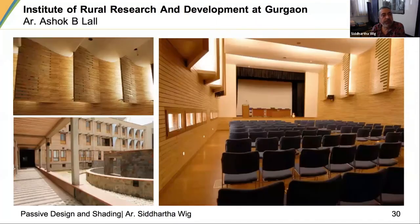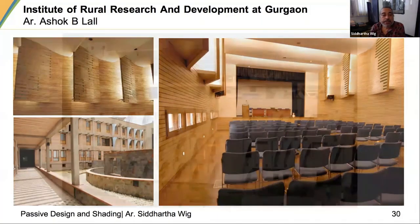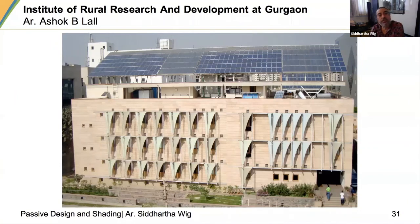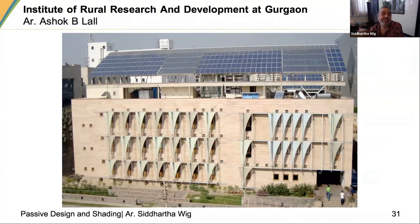Some views from the building show the choice of local materials — wood, stabilized soil blocks, local stone. From the outside, solar panels on the roof provide complete energy and also provide shade for the roof. The external shades are done in a very interesting aesthetic way, completely removing the regular chajja and replacing it with a more innovative approach to providing shade.